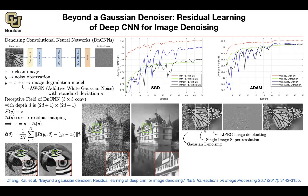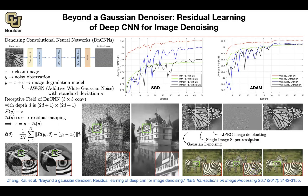What's interesting is the relationship between denoising, super-resolution, and deblocking — they are all the same in the eyes of this algorithm. You can see that on portions of the image Gaussian noise is added, on other portions the resolution is reduced, and on others JPEG compression deblocking is applied. The residuals look totally different — the JPEG noise pattern is definitely non-Gaussian — yet the same network handles all of them.